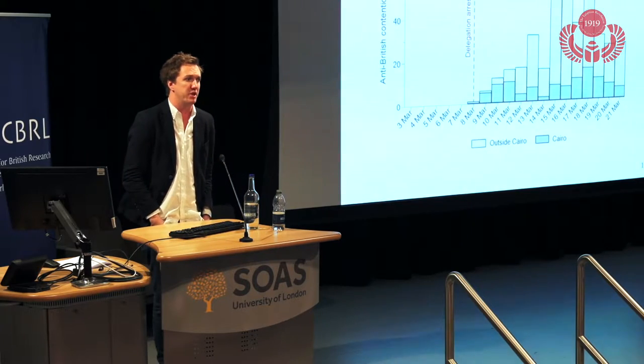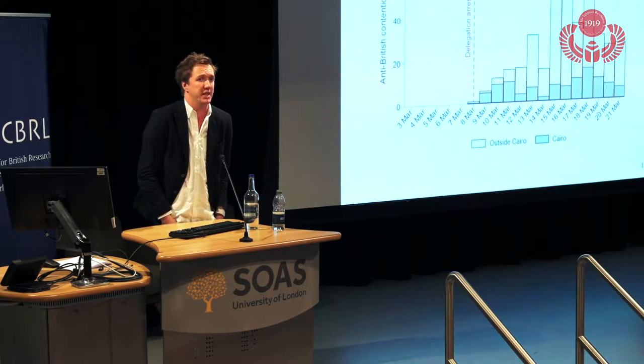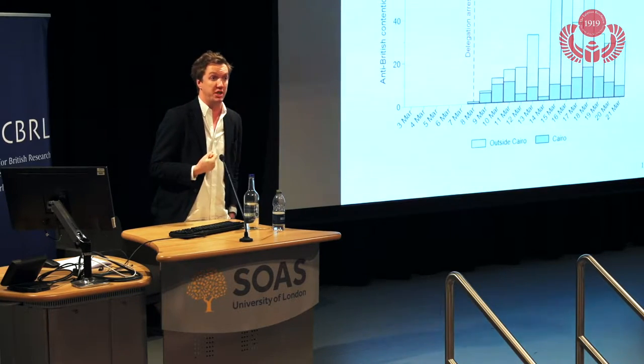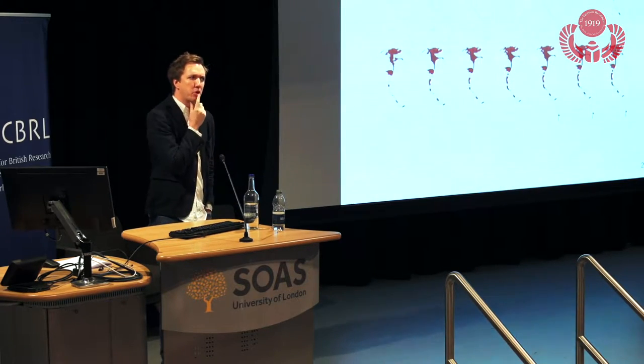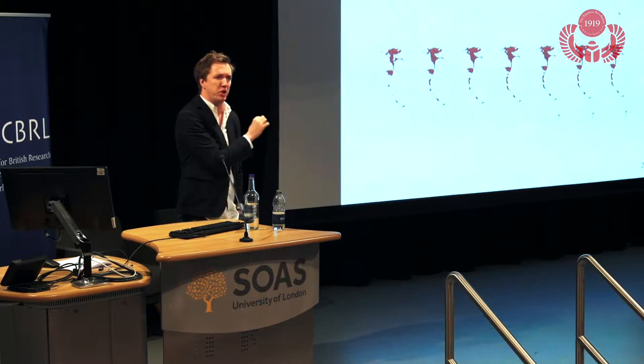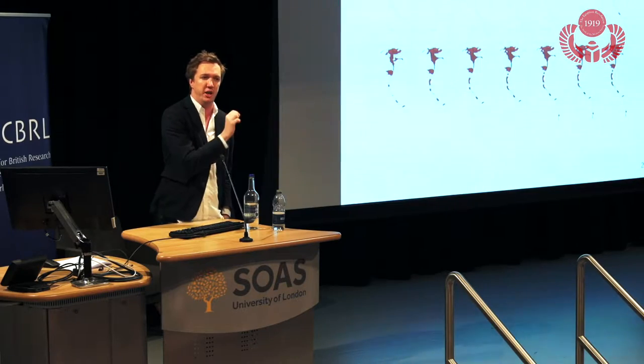The first protest happens on the 8th of March—it involves students, outside the British residency in what is now Garden City. Within days it spread across the country. We see the peak of protests on the 18th of March: nearly 70 protests across the entire country in just one day. This next graph looks at the spread of the 1919 revolution over space. These are the district boundaries of Egypt in 1919, and each map represents one day.